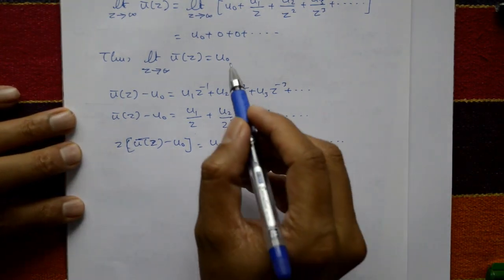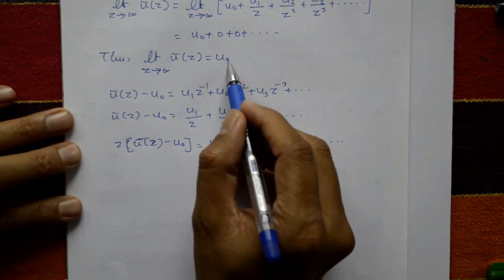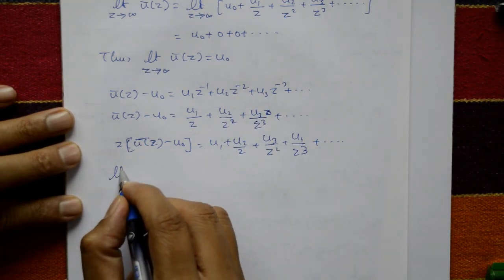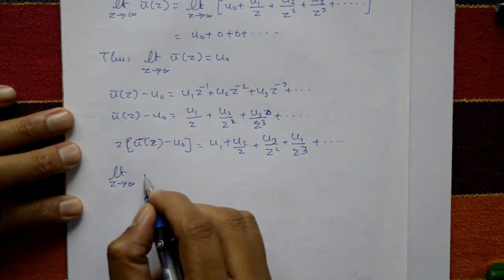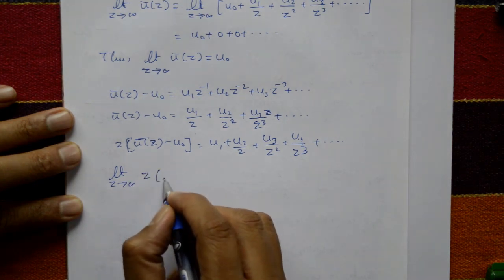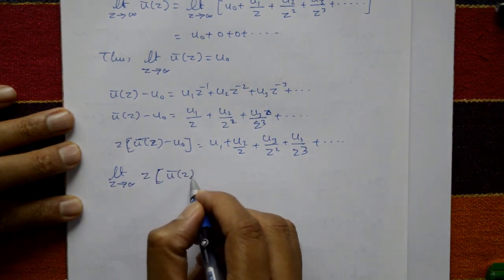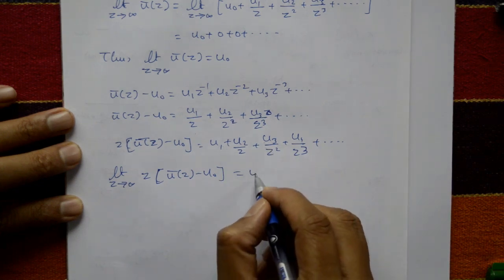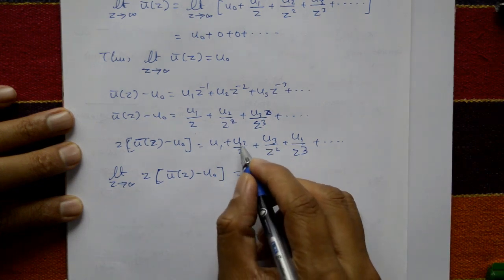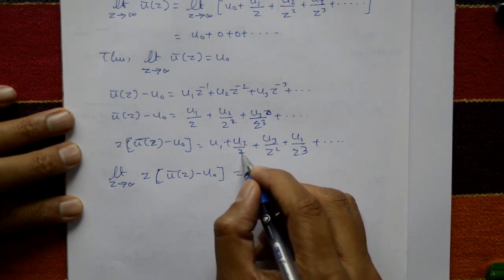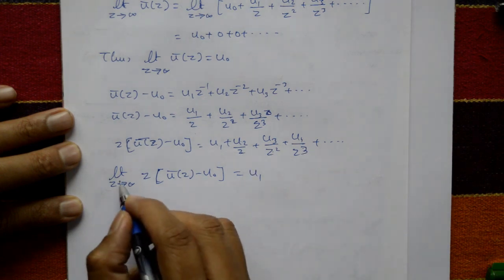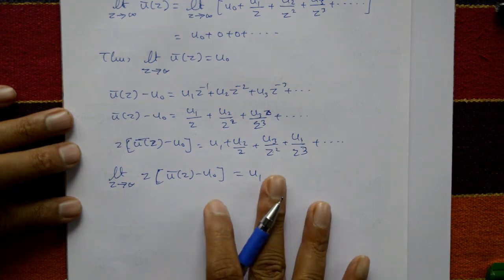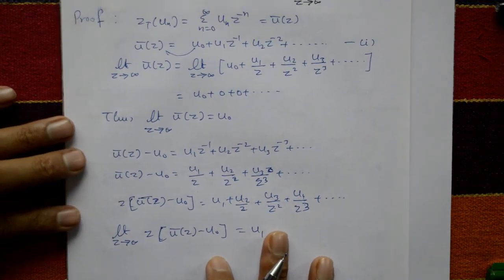Applying the limit as z tends to infinity to both sides: z times (U̅(z) minus u₀) gives u₁ on the right, and all remaining terms go to zero. Therefore, u₁ equals the limit as z tends to infinity of z times (U̅(z) minus u₀).